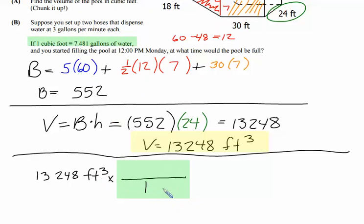And we have to pair this up correctly. So to cancel cubic feet, cubic feet is going to have to go on the bottom. And then to match up with cubic feet is 7.481 gallons. When we do that, the cubic feet will cancel because you're dividing cubic feet by cubic feet.